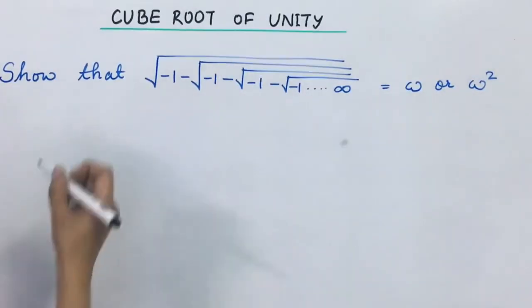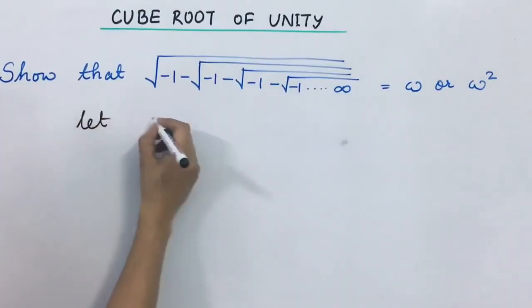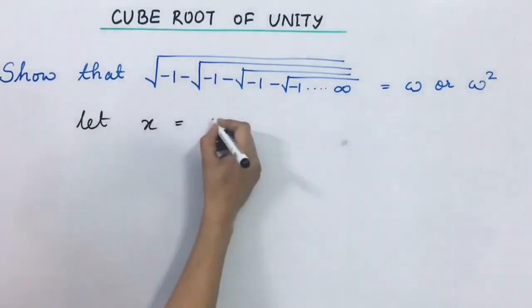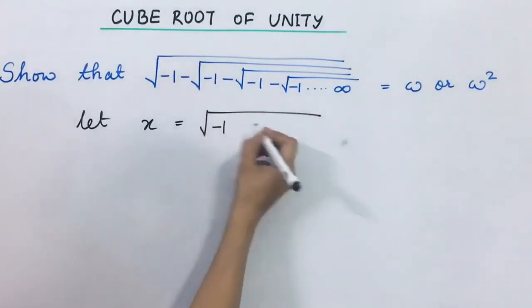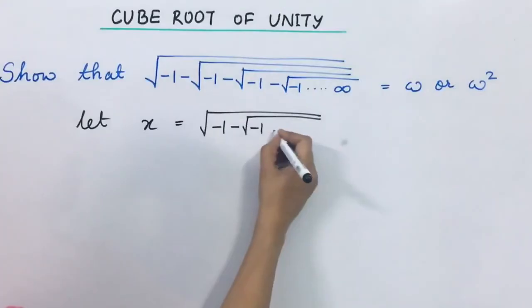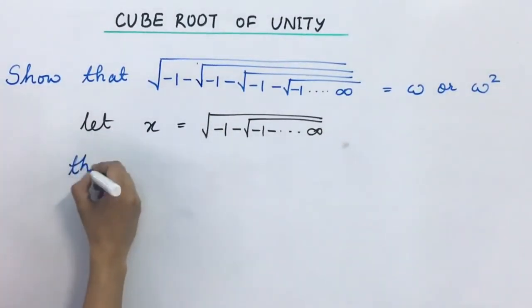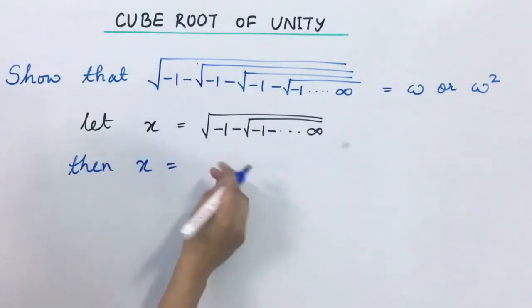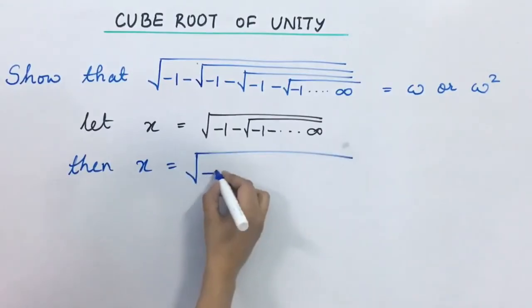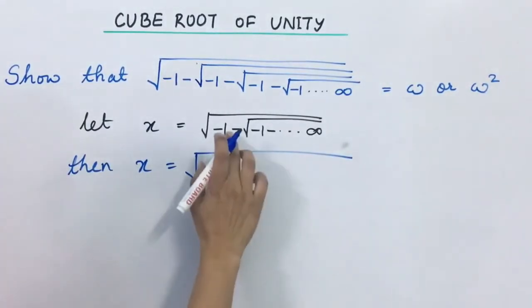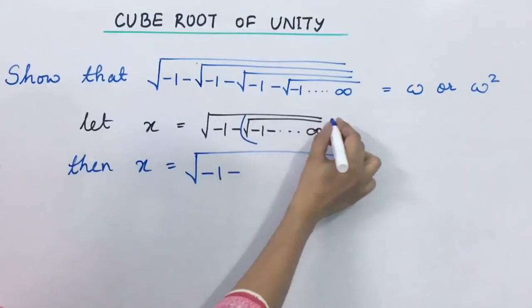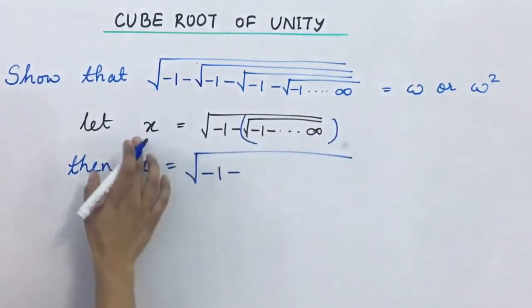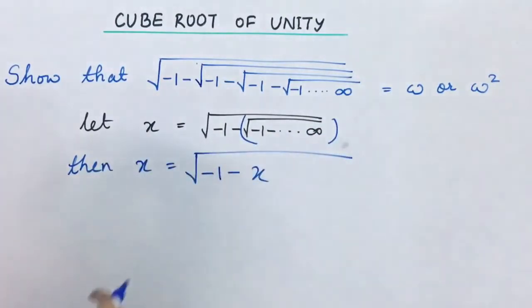Let's solve this. Let x be equal to square root of minus 1 minus under root of minus 1 minus up till infinity. Then x is equal to square root of minus 1 minus x as per our assumption.